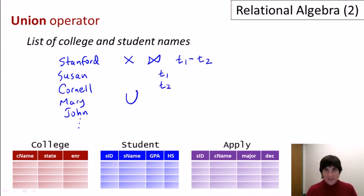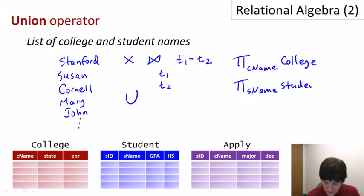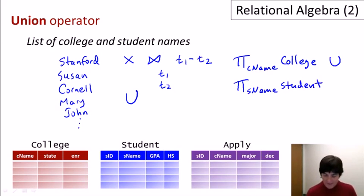To get a list of college names and student names, we'll project the college name from the college relation, giving us a list of college names. We'll similarly project the student name from the student relation. Then we apply the union operator between them to get our result. Technically in relational algebra, to union two lists they have to have the same schema — the same attribute name — and these don't, but we'll correct that later.